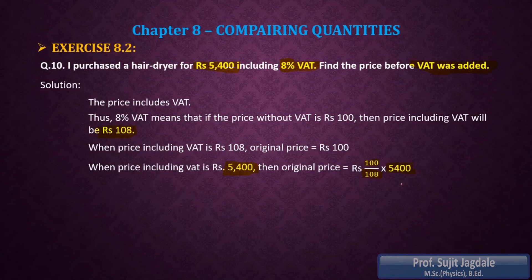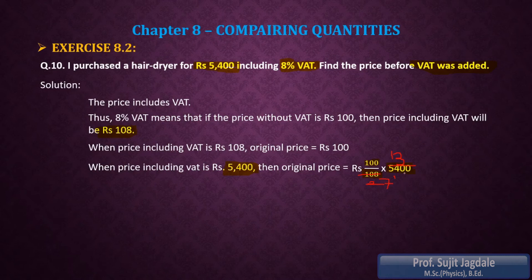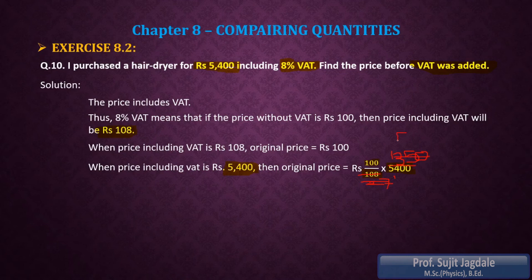Now you can solve it by dividing these numbers. It is divisible by 4: 5400 divided by 4 gives 1350, and 108 divided by 4 gives 27. So we get 1350 upon 27. Now 1350 is divisible by 27: 27 times 5 is 135, and that 0 is as it is, so it equals 50. Therefore 50 into 100 is 5000.